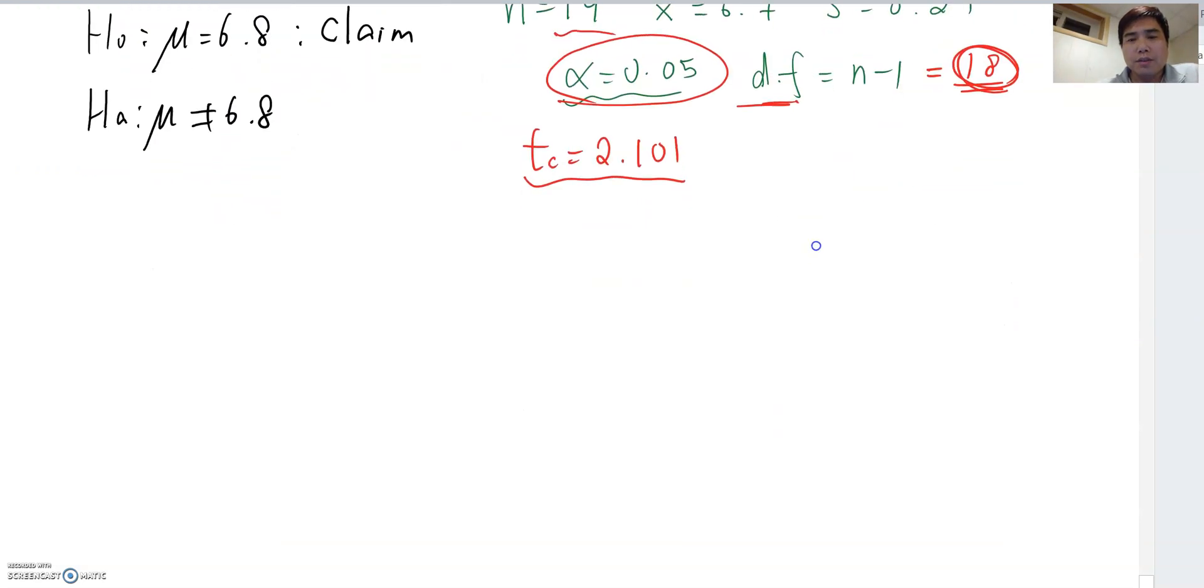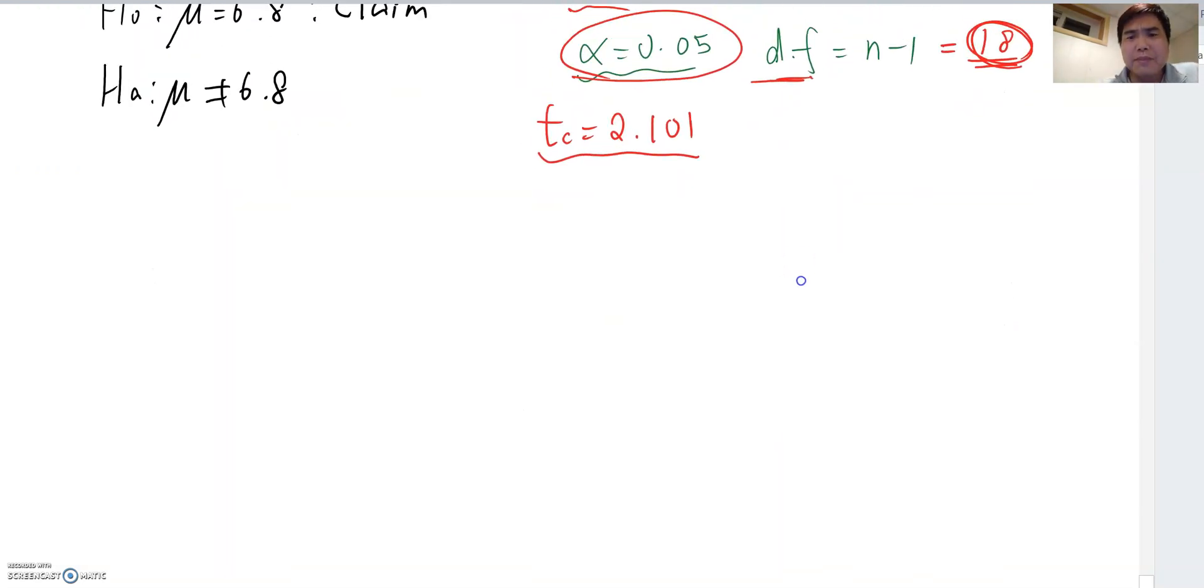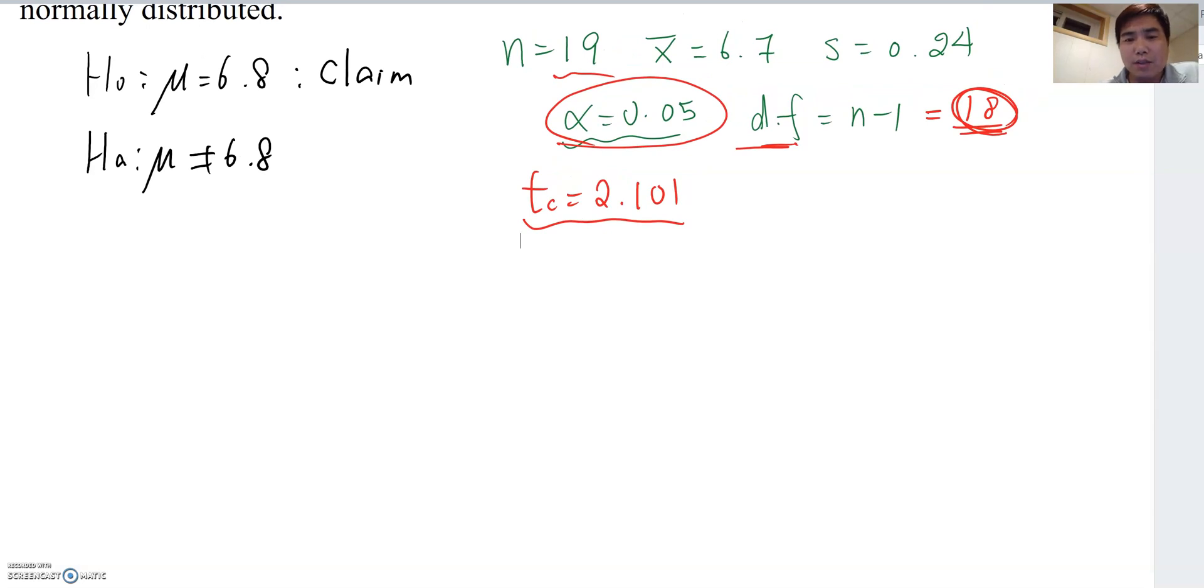Now we can set up the sample T test as well. T equals x bar minus mu over s over root n. Therefore, 6.7 minus 6.8 over 0.24 over root 19. Then we come out negative 1.816 to something like this. So we round to two digits, so it becomes negative 1.82.